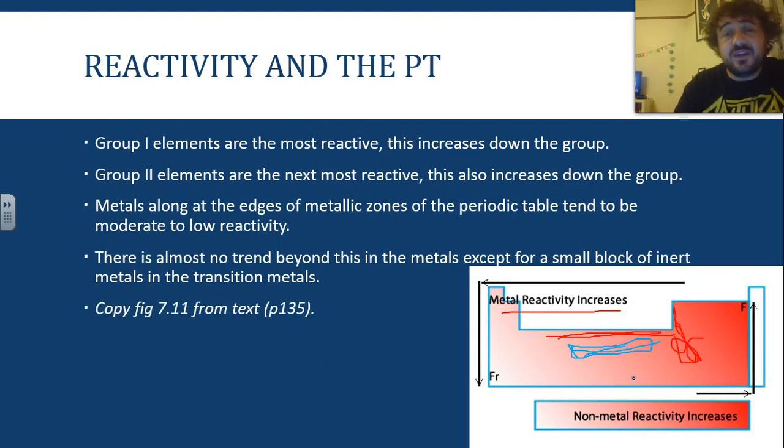So, there's a figure 7.1 in your textbook, probably you want to get that down with the same sort of labelling. Alright, that's it. That's ionization energy and reactivity in the periodic table. For metals, only metals.